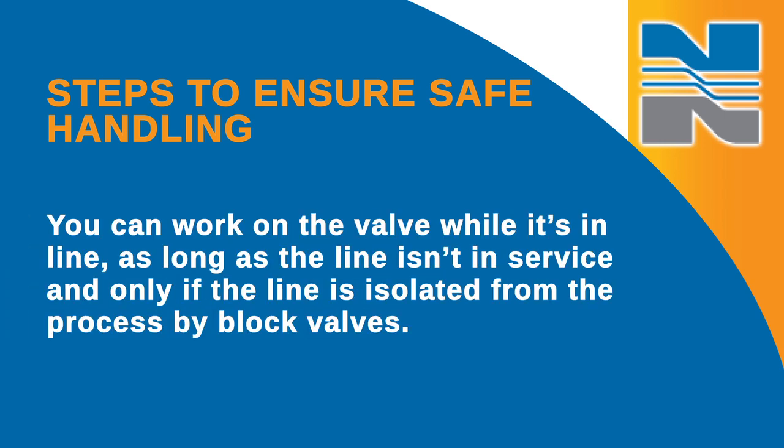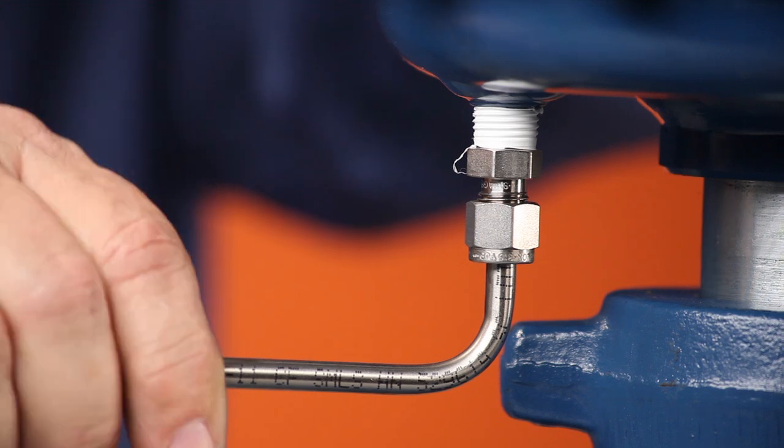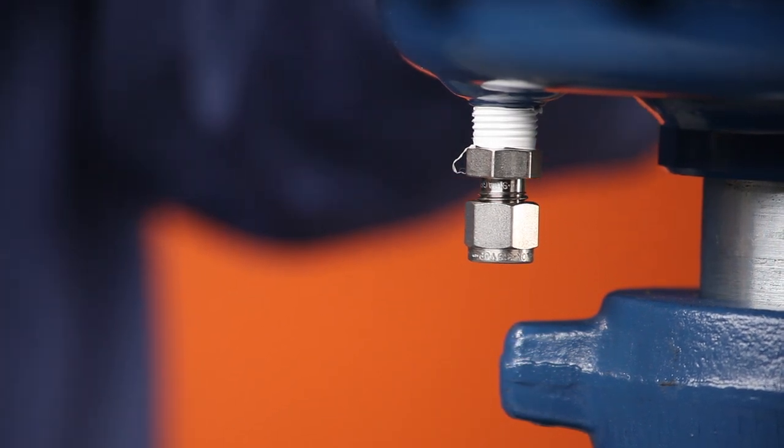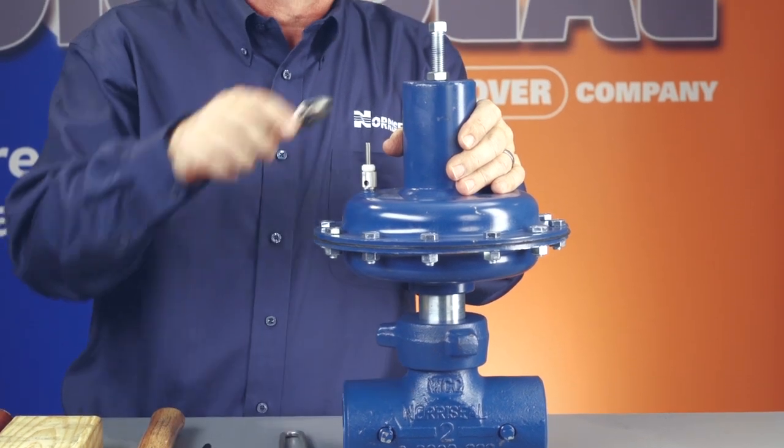You can work on the valve while it's in line, as long as the line isn't in service and only if the line is isolated from the process by block valves. To take the valve apart, you first want to vent and disconnect the supply pressure from the actuator. Then, you'll want to remove the spring compression.